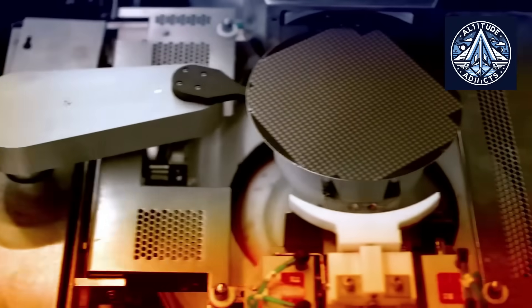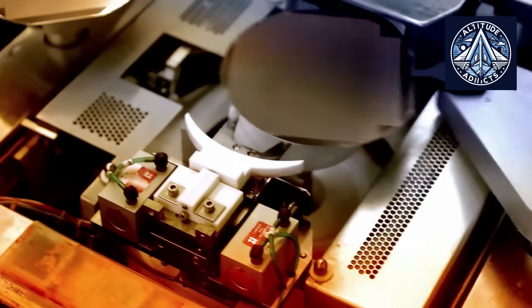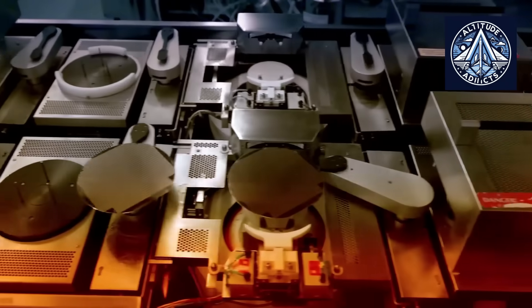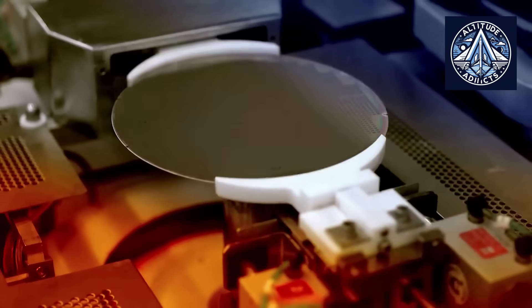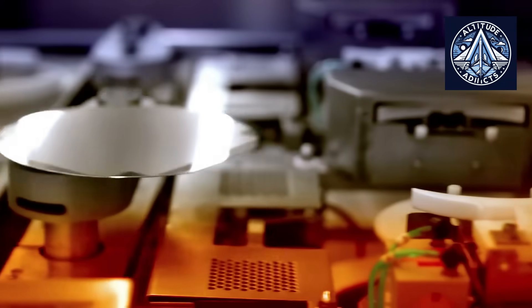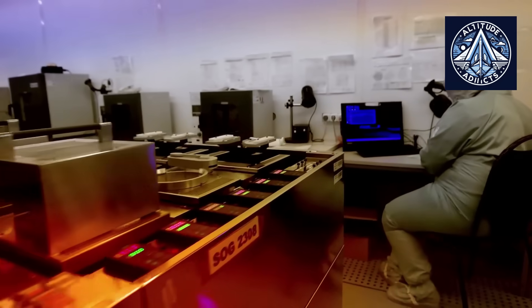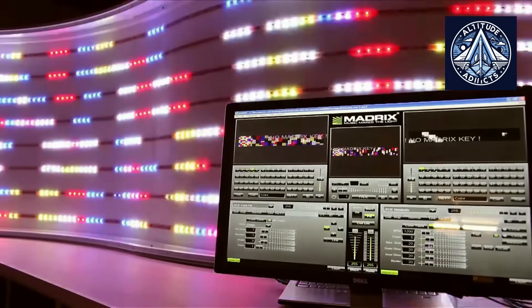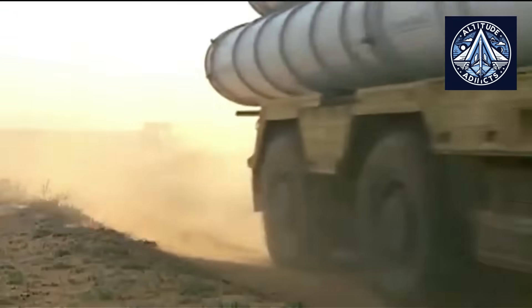A semiconductor factory, often called a fab, is very different from the typical factory most people imagine. A fab is made up of process engineers, clean rooms, chemical supply lines, and highly precise machines that turn silicon wafers into microchips.